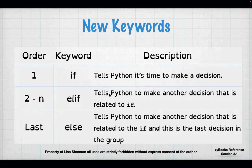We have some new keywords this week: if, elif, and else. There is an order for these three keywords. If is always the first question. Elif is a subsequent question, and you can have as many subsequent questions as you need. Else is the very last. The only one you absolutely have to have is if, but we'll see why we would use elif and else. If tells Python it's time to make a decision. Elif says I want to make another decision but it's related to the if. Else says when all else fails, do whatever I tell you to do.